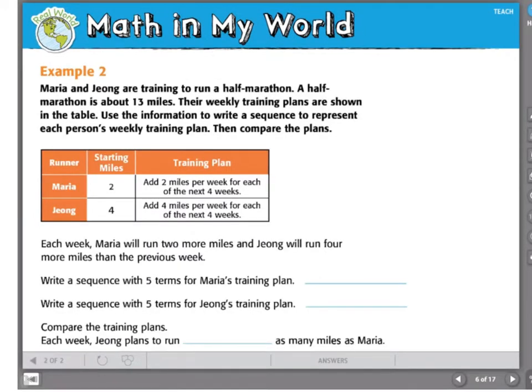Let's try another example. Maria and Young are training to run a half marathon. A half marathon is about thirteen miles. Their weekly training plans are shown in the table. Use the information to write a sequence to represent each person's weekly training plan. Maria will start her training plan running two miles and then will add two miles per week for each of the next four weeks.